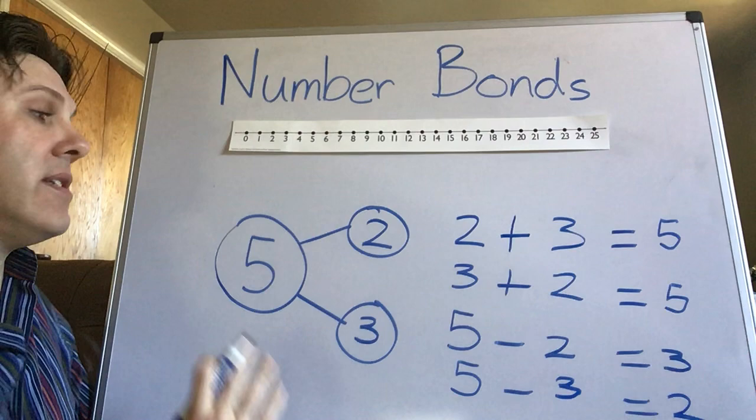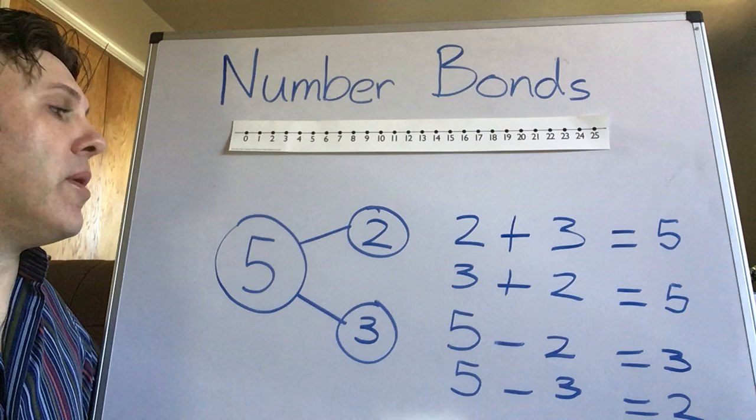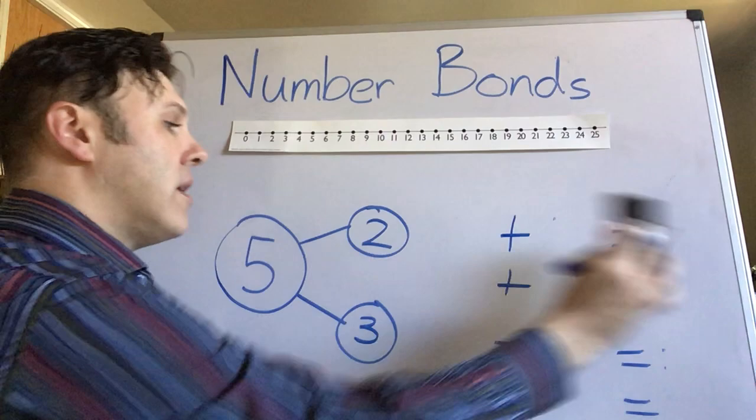So from this very simple math bond of what two numbers create another number I can create four different equations. Let's try it again but with a little bit of a bigger number. Something a little bit harder. So here we go.